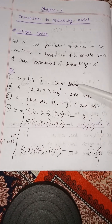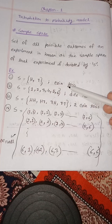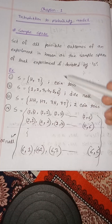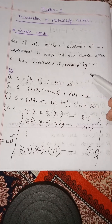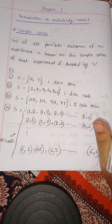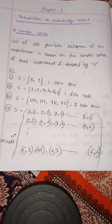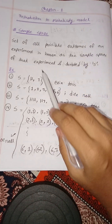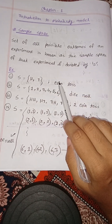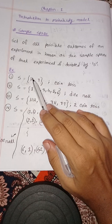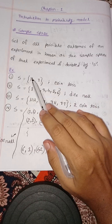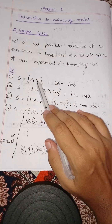Now we will look at the coin toss example. We will test the coin toss and examine the sample space of the head and tail outcomes.